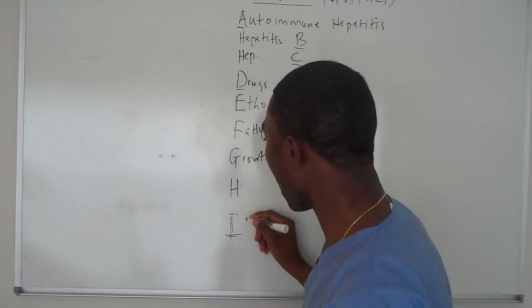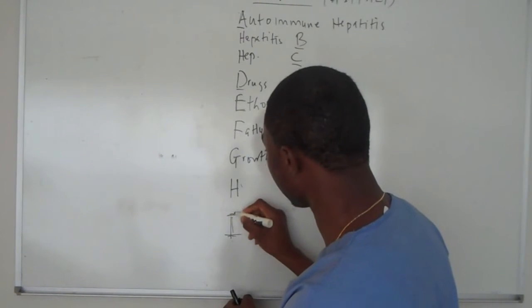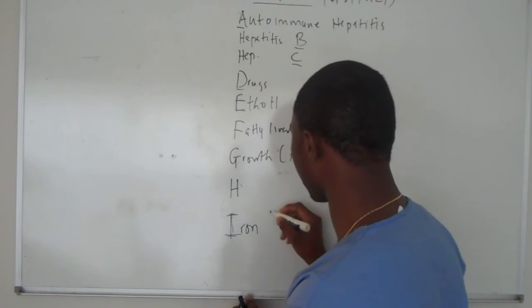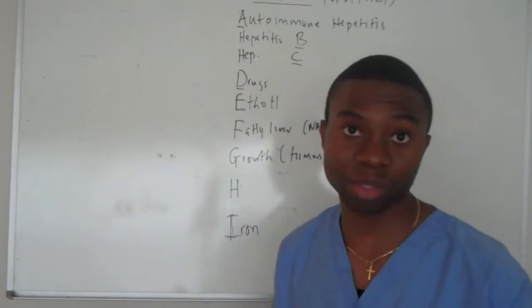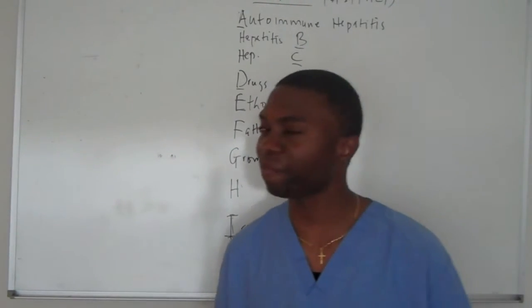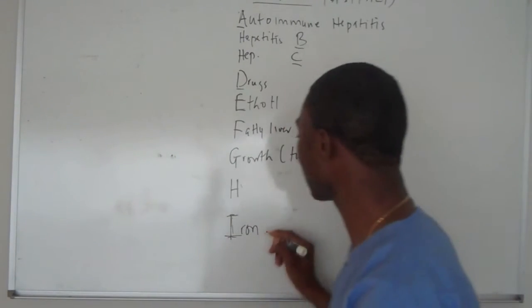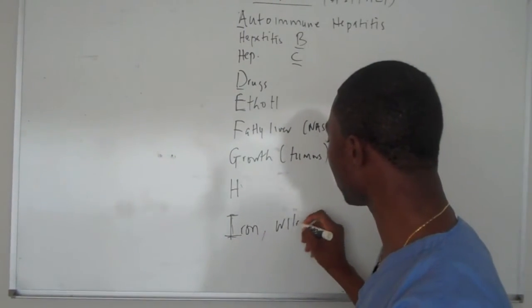H and I, I put I as infiltrative and I call it iron, like hereditary hemochromatosis where you have a lot of iron deposition. Iron forms a lot of free radicals. It's the free radicals that's killing your liver, guys. Wilson's disease will do it.